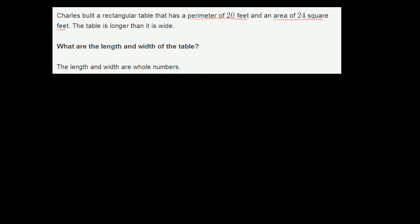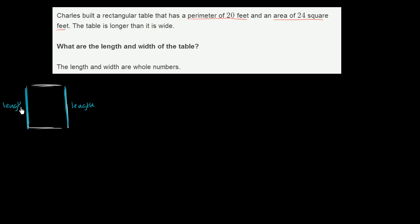So it's longer than it is wide. Let's draw this table here. The table might look something like this, where this dimension right over here is the length. We could also write length on the opposite side to show that these two sides have the same length. And then we could call this dimension right over here the width — and this is also the width as well. This is a rectangle, so these two sides are going to be the same.